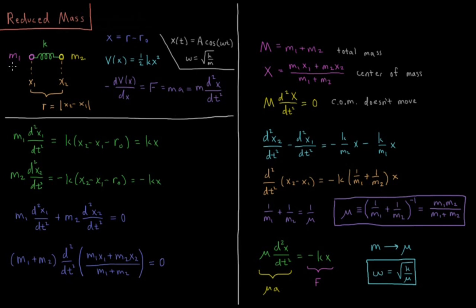We can write Newton's second law for each of these individual atoms. So F = ma for each of them. m1 times the second derivative of position 1 with respect to time equals k times (x2 - x1 - R0). That's from V(x) equaling 1/2 kx², x equals R minus R0, and R equals x2 minus x1. So k times (x2 - x1 - R0), which is equal to kx.